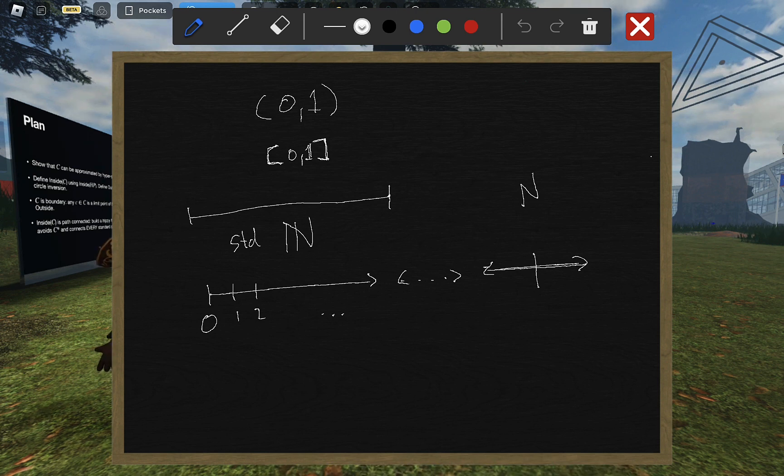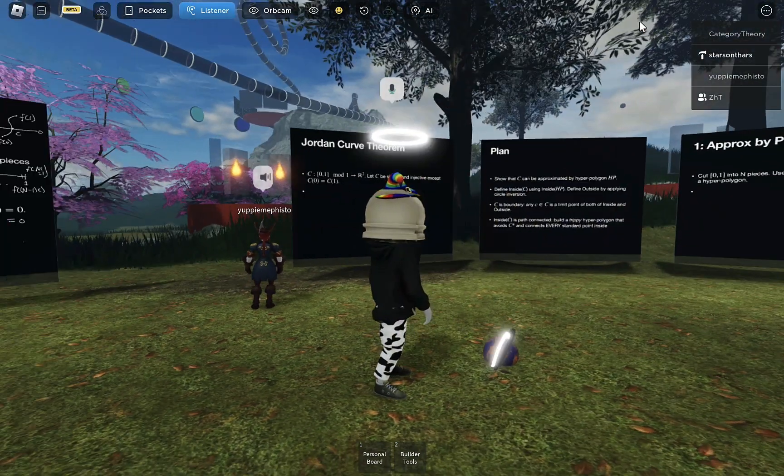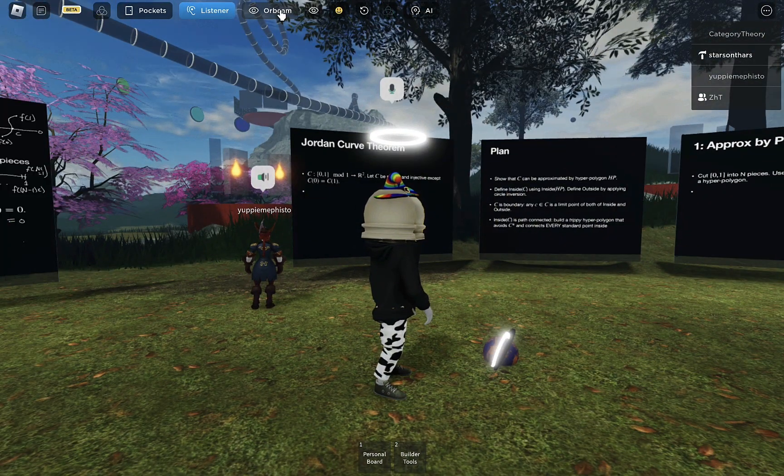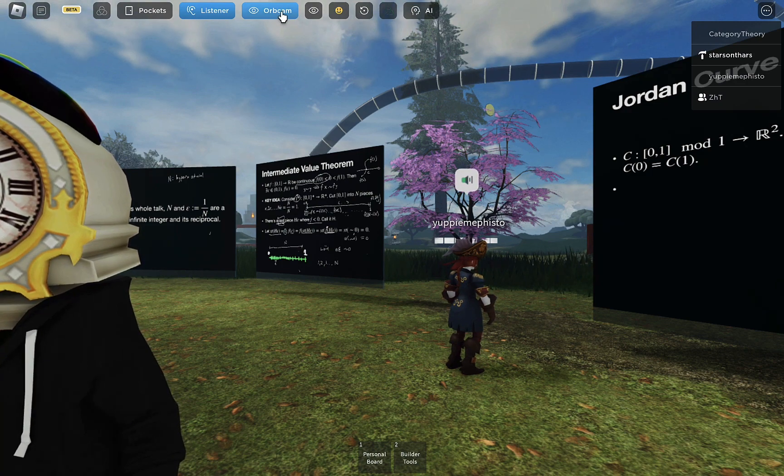Okay. We're gonna now use this to illustrate part of the Jordan curve theorem. I'd hoped to do the whole theorem, but it turned out that was too ambitious. But that's alright. Because the part we're gonna illustrate is still pretty wild.